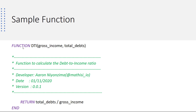Our function here is called DTI. It has two parameters: gross income and total debts. Then we can determine the DTI the same way we did in the subroutine, and return the value.